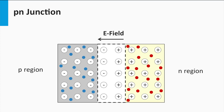In a P-N junction, the diffusion of majority charge carriers through the P-N interface, followed by recombination, creates a space charge region or depletion zone at the P-N interface. In the dark and in thermal equilibrium, drift of minority charge carriers and diffusion of majority charge carriers are in balance.